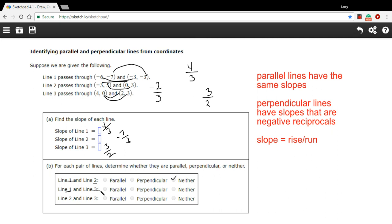Lines 1 and 3. So 1 has 4 thirds and 3 has 3 halves. Again, they're not the same, so they're not parallel. They're not negative reciprocals of each other, so they're neither.